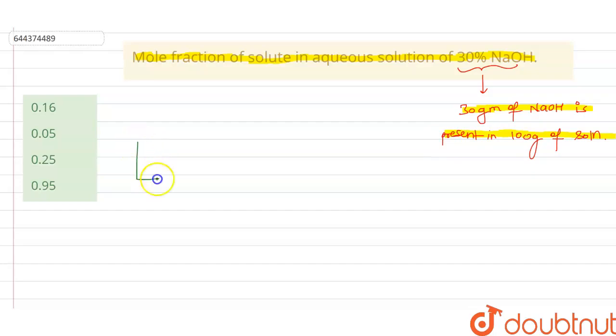Now here the important point to remember is that solution contains two things. First is solute, the substance which is dissolved in the solvent, and second is solvent in which the solute is dissolved. These two comprise the solution.